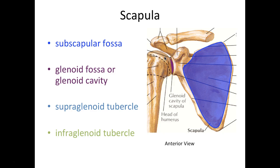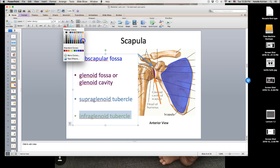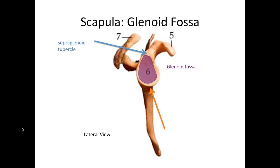Breaking down supraglenoid tubercle: supra means it's above the glenoid, so it's a bump above there. And the infraglenoid tubercle is a bump below the glenoid fossa. Looking at the scapula laterally — with the humerus removed — you can see the glenoid fossa, the supraglenoid tubercle, and the infraglenoid tubercle.